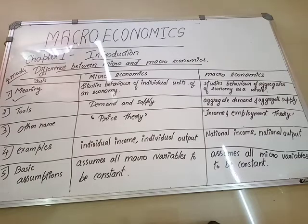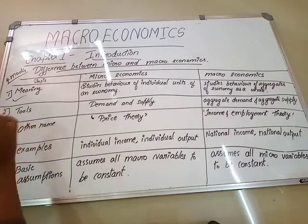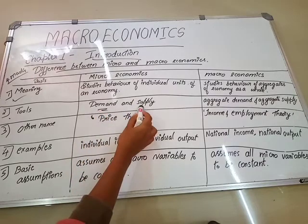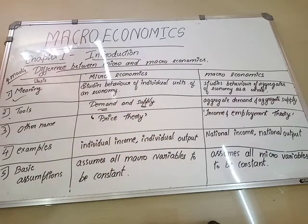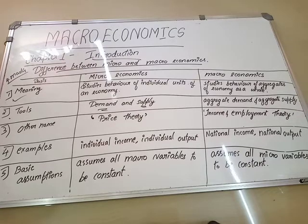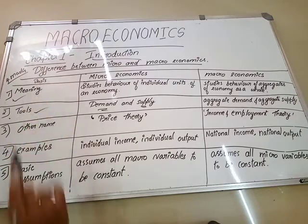The second difference: what are the tools used in micro and macroeconomics? In microeconomics, we basically use demand and supply — individual demand and individual supply of an individual firm. Whereas in macroeconomics, we use aggregate demand and aggregate supply, not individual — all together. So these are the tools used.